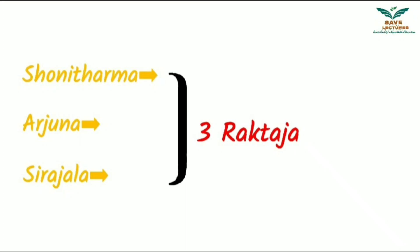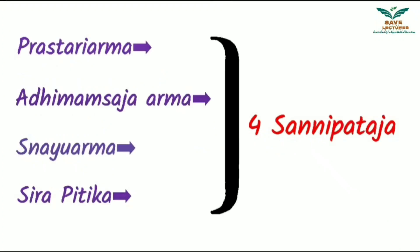Remember the other two Raktaja Rogas — Arjuna and Shira Jala — along with Shonita Arma. The remaining four are Sannipataja. If you remember the Pittaja, Kafaja, and Raktaja Rogas, you will be able to identify the remaining four Sannipataja Netra Rogas.